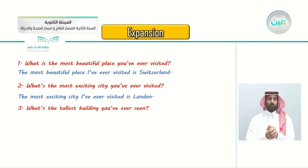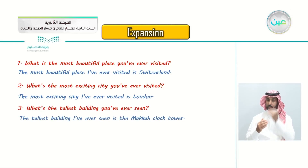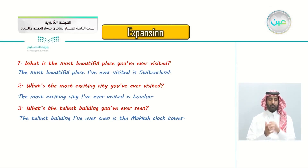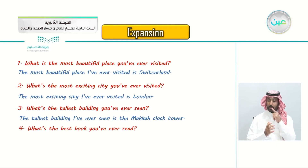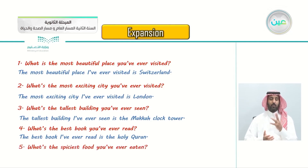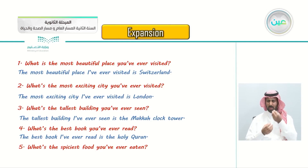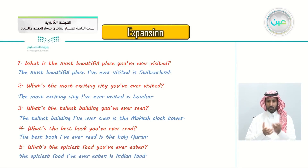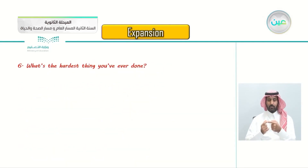Number three: what's the tallest building you've ever seen? The tallest building I've ever seen is the Mecca clock tower. Number four: what's the best book you've ever read? The best book I've ever read is the Holy Quran. Number five: what's the spiciest food you've ever eaten? The spiciest food I've ever eaten is Indian food.